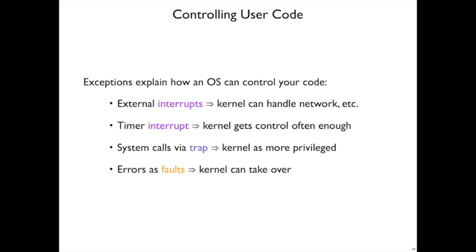These exceptions explain how the operating system can control user code - how it can run programs and constrain them from doing everything, even though those programs get to run directly on the CPU. External interrupts mean the kernel gets the opportunity to handle any network information that comes in or mouse movements. A timer interrupt, meanwhile, makes sure the kernel gets control often enough, so your program can't just ignore everything else happening on your computer indefinitely - because the kernel will periodically get control from a timer interrupt.